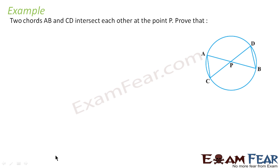Two chords AB and CD intersect each other at point P. We have to prove that triangle APC is similar to triangle DPB, and also AP into PB is equal to CP into PD.